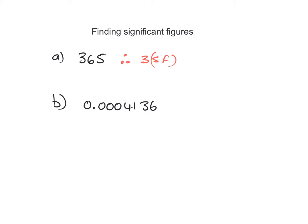Using the rule where we only start counting after the first non-zero digit, which would be this one over here, we therefore have 1, 2, 3, and 4. Therefore, we have four significant figures.